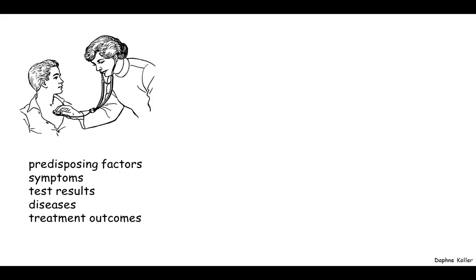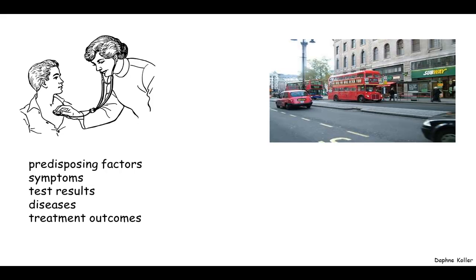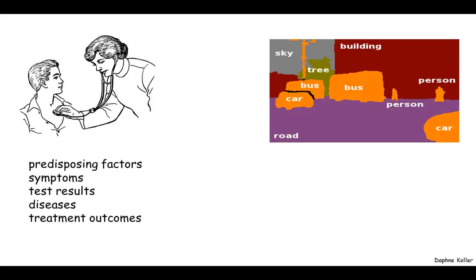A very different application that is in common use today is in the area of computer vision. Here we might have an image such as this, and we'd like to figure out what's in it. So we'd like to label, for example, different regions of the image as representing different semantic categories: car, road, sky, tree, and so on.